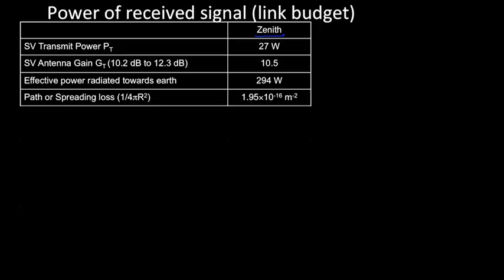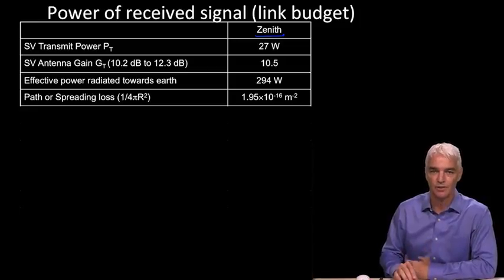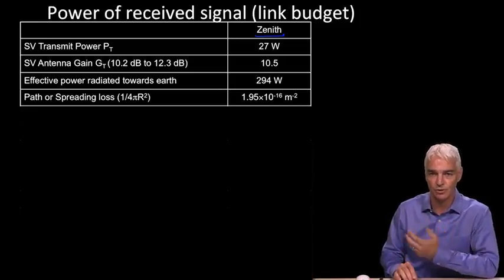Then we can, having done that trick, we can treat the spreading loss simply as 1 over 4πr², which is that number. And you see how small the numbers we get right away when we talk about the radius of the signal from the satellite to the Earth.